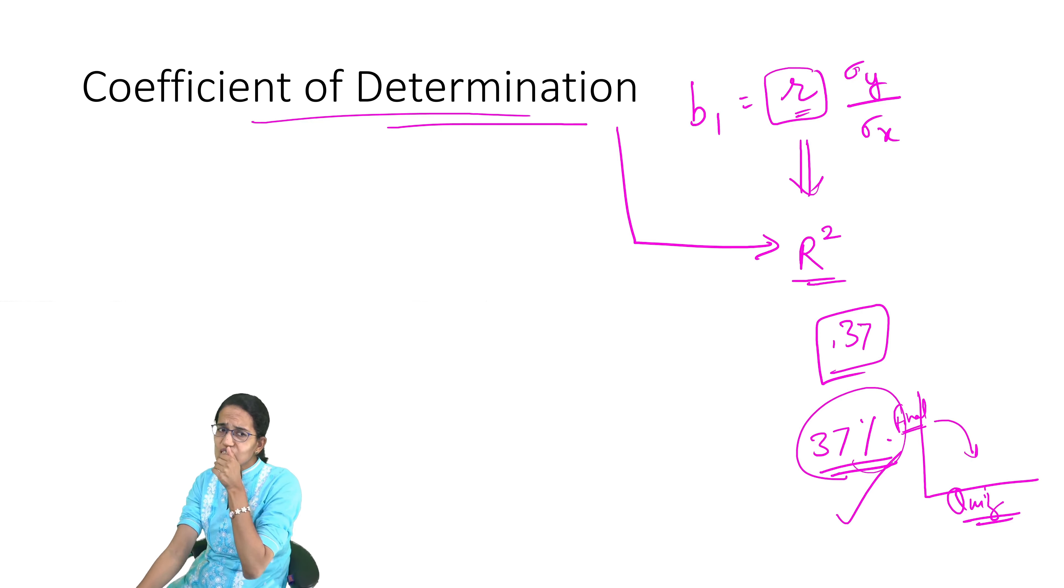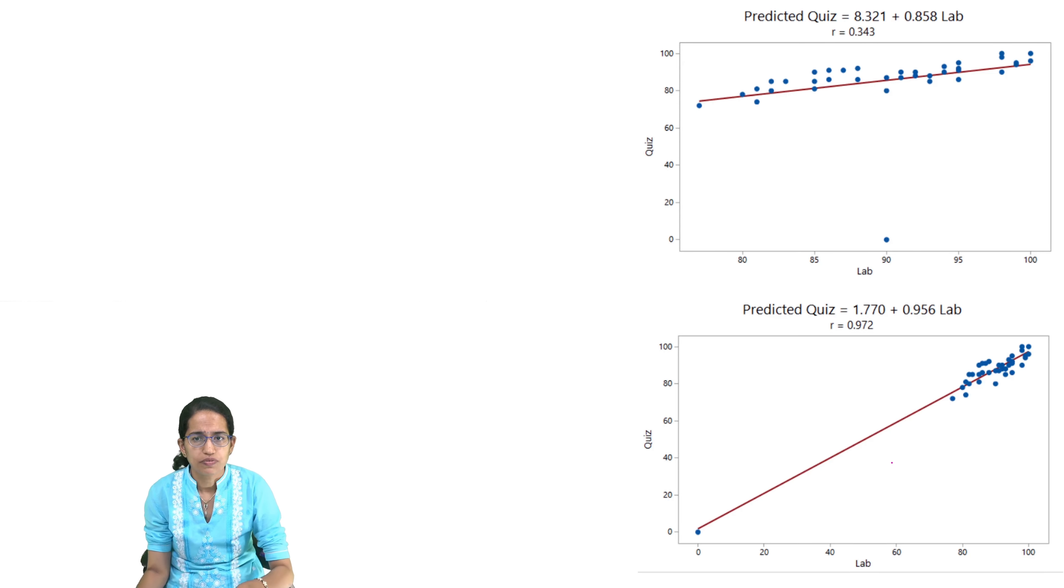So this is how we explain the coefficient of determination. Now, the same thing that I mentioned: if there is an outlier at 90, or if there is an outlier at zero, in both of these cases as you can see, my r value changes significantly.